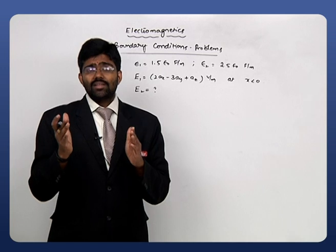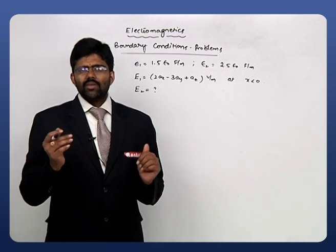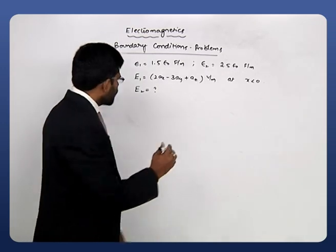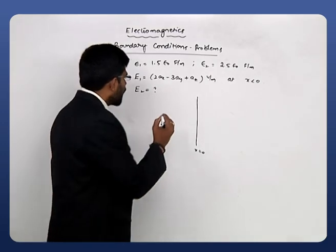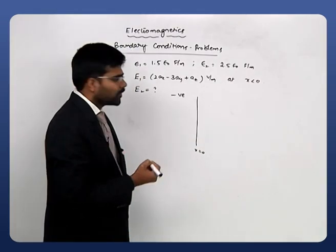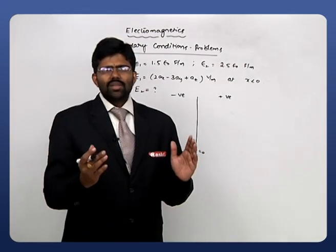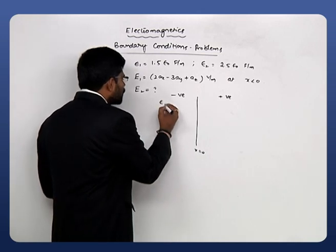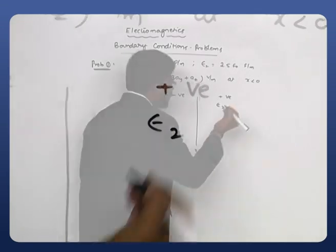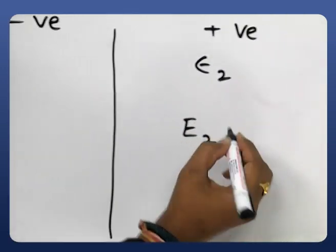Recollecting the rectangular coordinate system: we draw the yz plane where x=0. Below this plane is the negative x-axis, above is the positive x-axis. For x<0 we have ε₁, and for x>0 we have ε₂. E₁ is given; we are supposed to identify E₂.